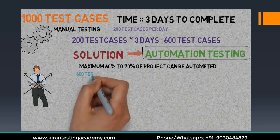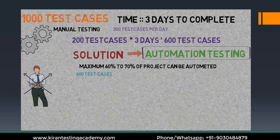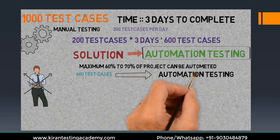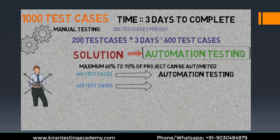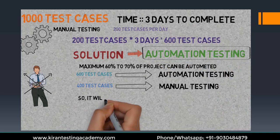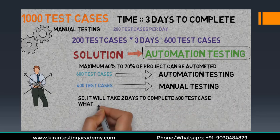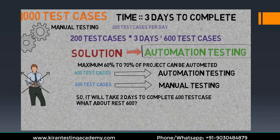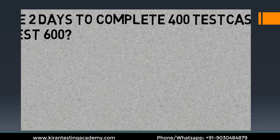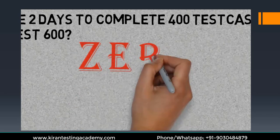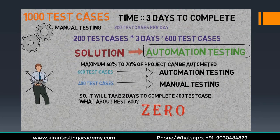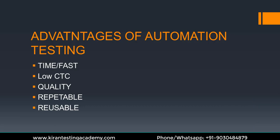So 40% will be manual. In that case, 600 test cases will be manual. To execute those 400 manual test cases, it takes 2 days, leaving only 1 day. In that 1 day, can I execute the 600 test cases using automation? Yes, I can. So how much time does it actually take? It takes zero time — it doesn't happen in a fraction of seconds literally, but the key idea is that automation executes those test cases without using your personal time.